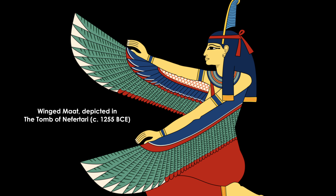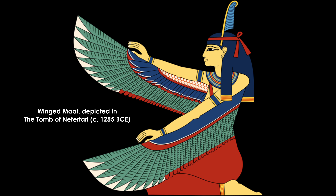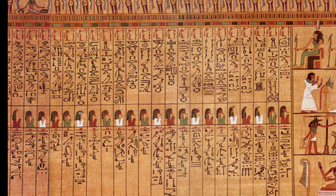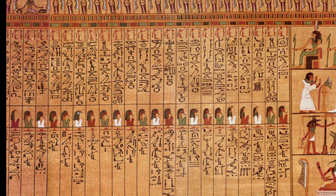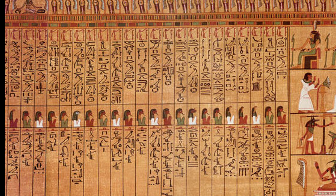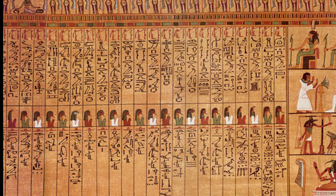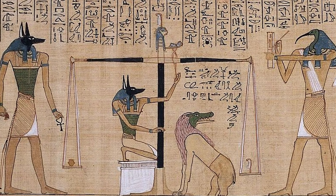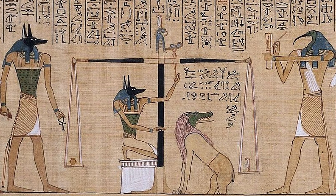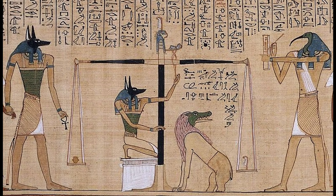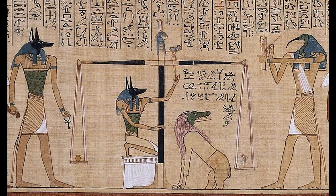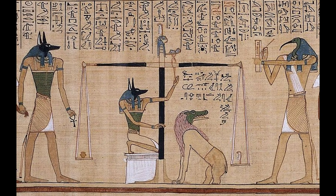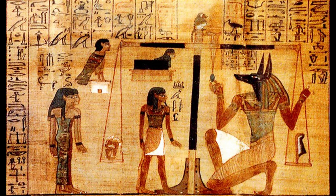It was the duty of both humans and natures to uphold and maintain Ma'at, ensuring the world remained in balance. The concept encompassed truth and justice — truthfulness, honesty, and righteous behavior were essential for a stable society. Ma'at also provided cosmic order and structure, ensuring natural and social systems worked in harmony. Harmony and balance were emphasized in all aspects of life, symbolized by the weighing of the heart against her feather in the judgment of the dead.